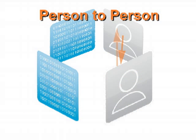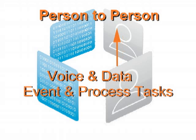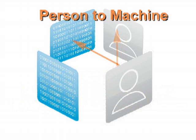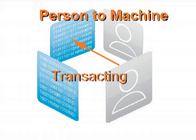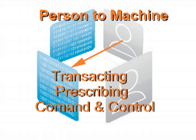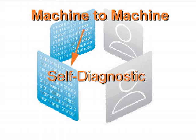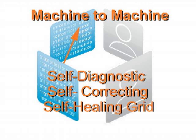Person-to-person, or collaborative communications, which is used for voice and data, event and process-oriented tasks, and exception-driven problems. Person-to-machine, or proactive communications, which is used for transacting, prescribing, and command and control. And machine-to-machine, or automated communications, which enables a self-diagnostic, self-correcting, self-healing grid.